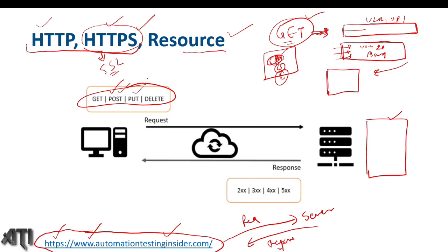If you talk about the PUT method: suppose we want to update an address on the server which is an already existing record — we use the PUT HTTP method. And if you talk about DELETE: suppose we want to delete something from the server, we use the DELETE HTTP method. So these are the important HTTP methods which we use frequently when we work with APIs.